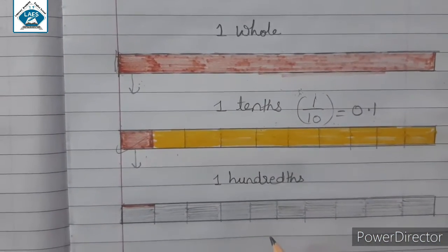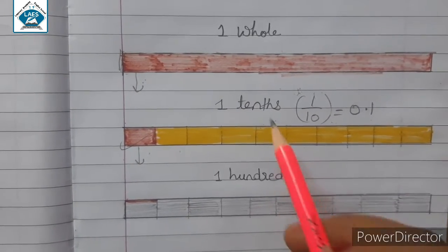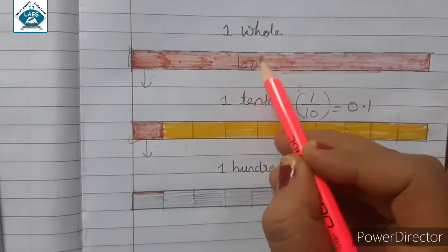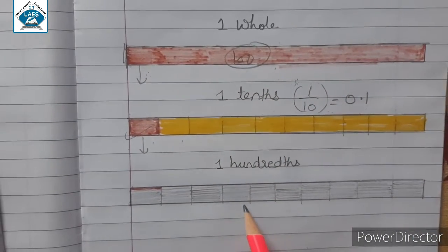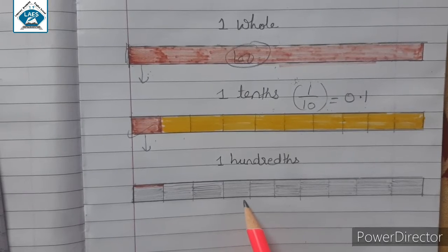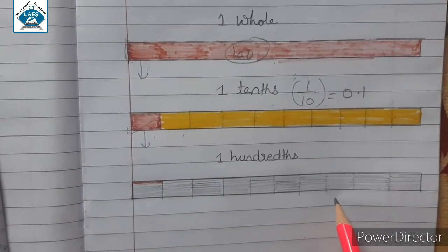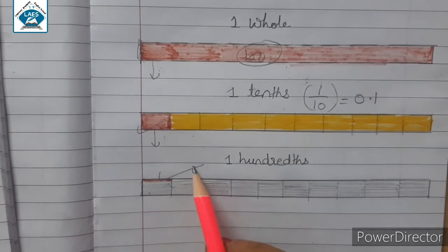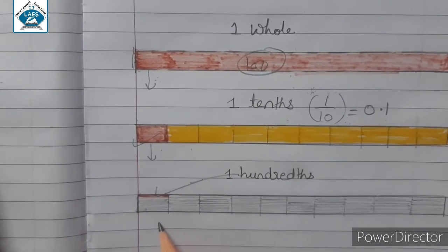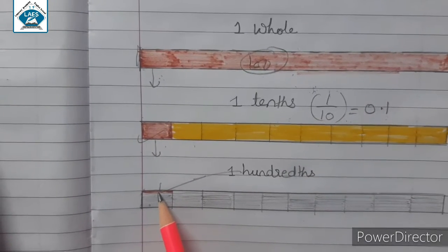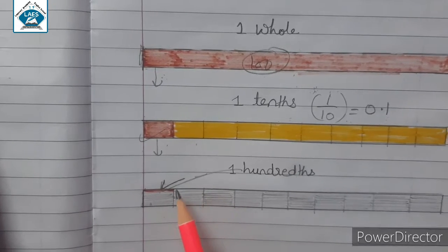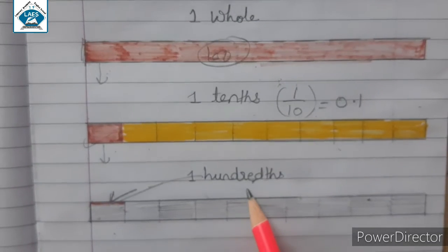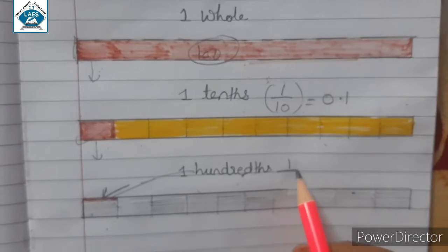Now let's understand one hundredths. Suppose that we have taken one whole part. We will divide this whole part into hundred equal parts. At the bottom side you can see the whole part was divided into hundred equal parts, so each part will be known as its one hundredth part. You can see one box is colored red — that part is known as one hundredth part. In fraction we will write it as one upon hundred.